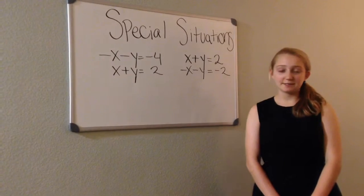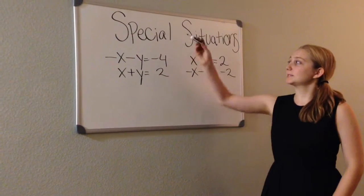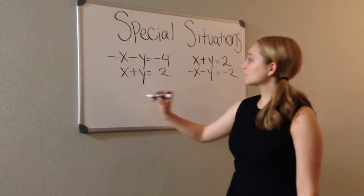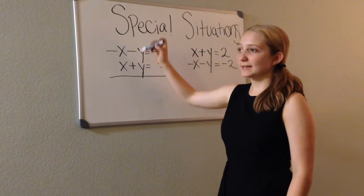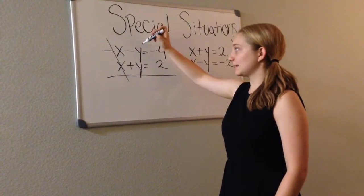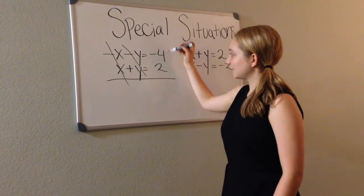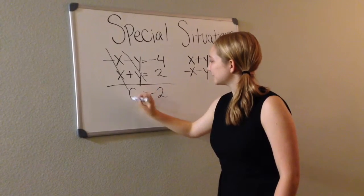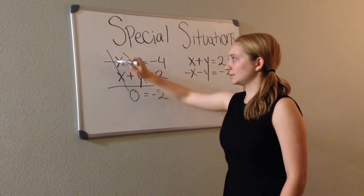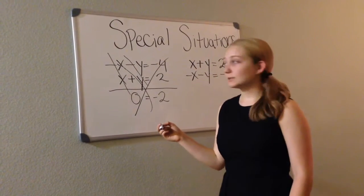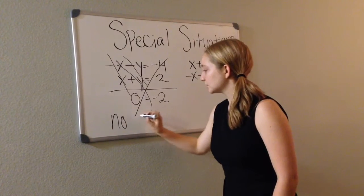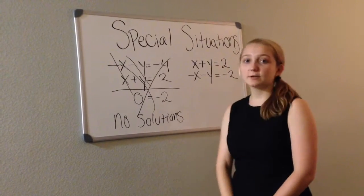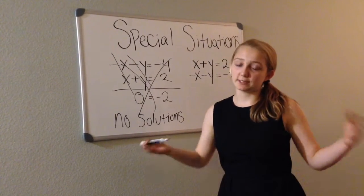Systems of equations aren't always as cut and dry. There are special situations. Using elimination on the first special case: the negative X and positive X cancel, as do the negative Y and positive Y. You're left with 0 equals negative 2, which is not correct. Therefore, these two equations have no solutions. On a graph, these lines would be parallel — they would never touch.